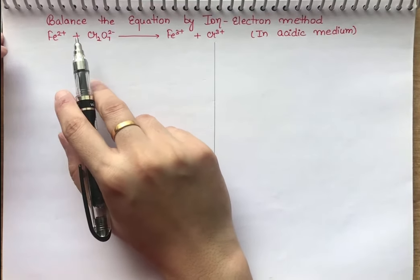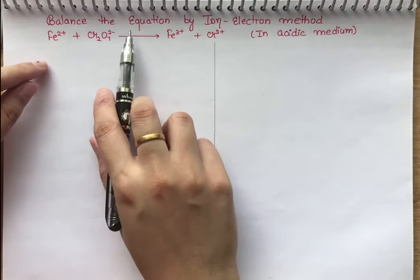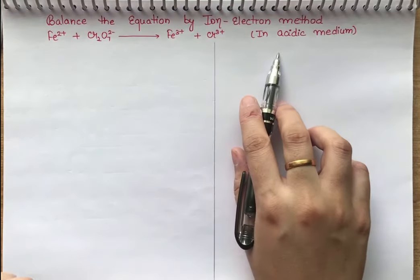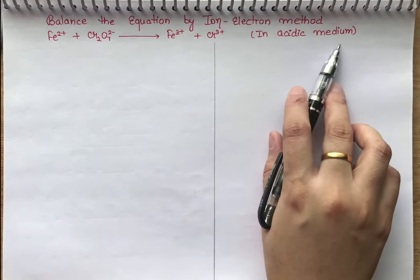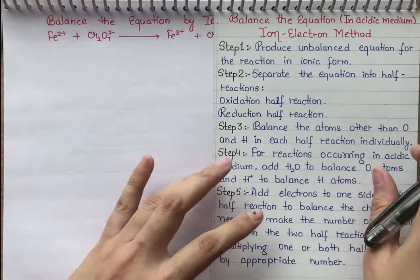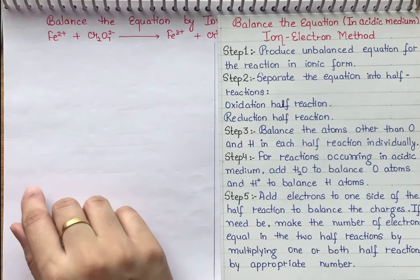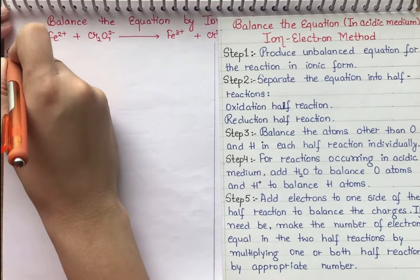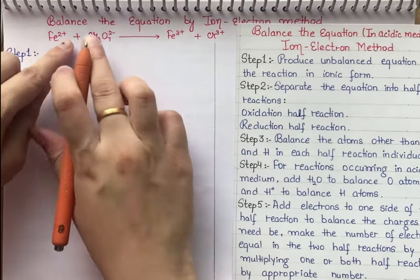Hello students. In today's session we'll talk about balancing a reaction by the ion-electron method. Today's topic is how to balance a reaction in acidic medium. We'll follow some steps to solve this reaction. The first step is to produce an unbalanced equation for the reaction in ionic form, so Step 1 is to write the unbalanced equation.